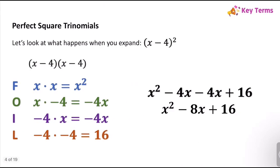Now let's look at what happens when you expand (x − 4)². First times first is x², outside is x times negative 4 which is −4x, inside is negative 4 times x which is −4x, and last is negative 4 times negative 4 which is positive 16. Adding all terms, that −4x and −4x combine to −8x, giving us x² − 8x + 16.